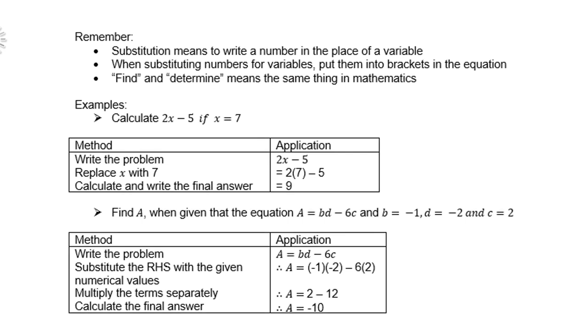Remember, substitution means to write a number in the place of a variable. When substituting numbers for variables, put them into brackets in the equation. Find and determine mean the same thing in mathematics. Example: calculate 2x minus 5 if x is 7. We write down the problem, do the substitution using brackets, then you'll get 2 times 7 minus 5 equals 9.